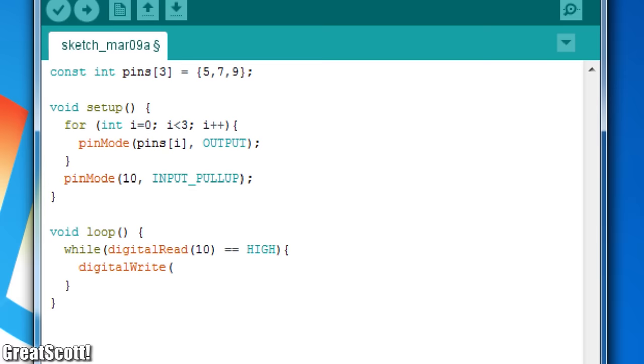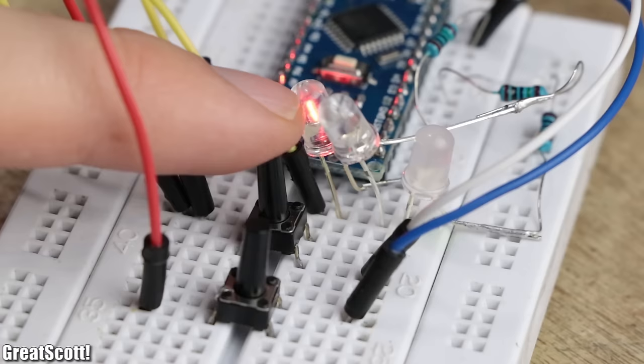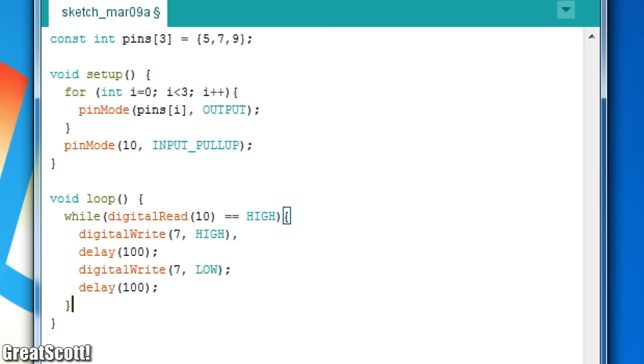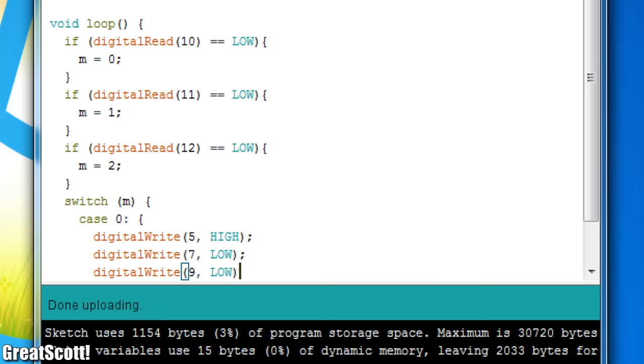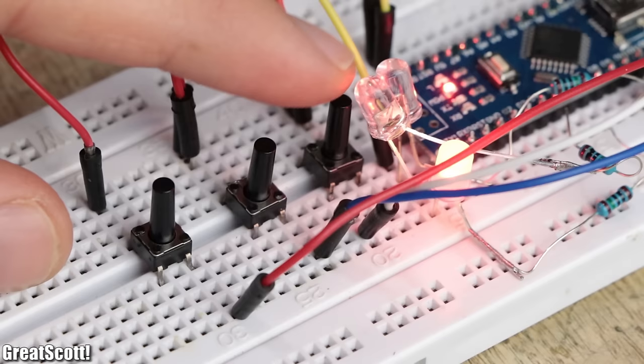Next, we got the while structure, which in comparison to the if and for structure, loops a defined action endlessly until a certain condition is met, and then continues with the rest of the sketch as usual. And lastly, we got the switch structure, which can perform different actions dependent on the value of a variable. This way, we could light up three different LEDs dependent on which pin was pulled to ground through a push button.